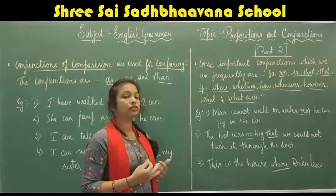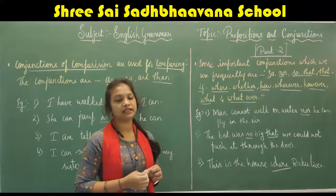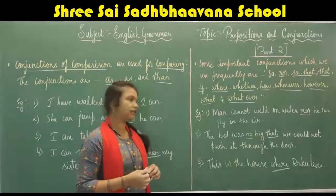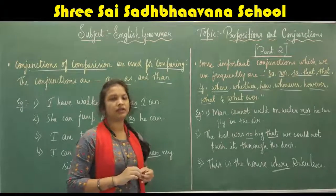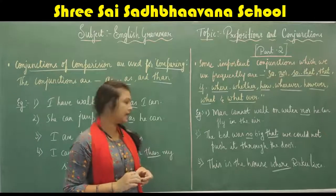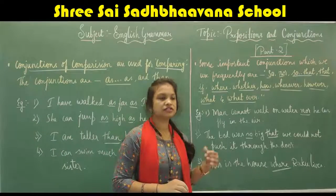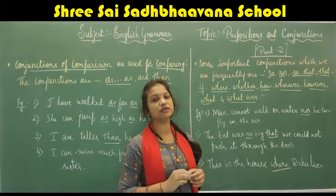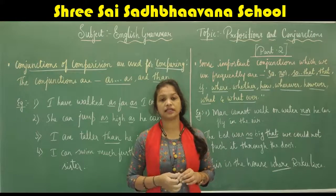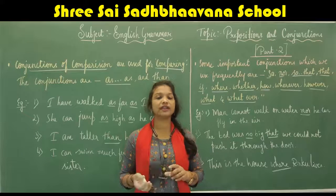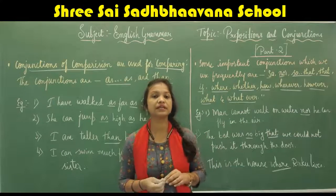Examples of frequently used conjunctions: 'Man cannot walk on water, nor can he fly in the air.' 'The bed was so big that we could not push it through the door.' 'This is the house where Rinko lives.' 'Can you tell me how it works?' 'Whatever happens, we have to face the problem.'